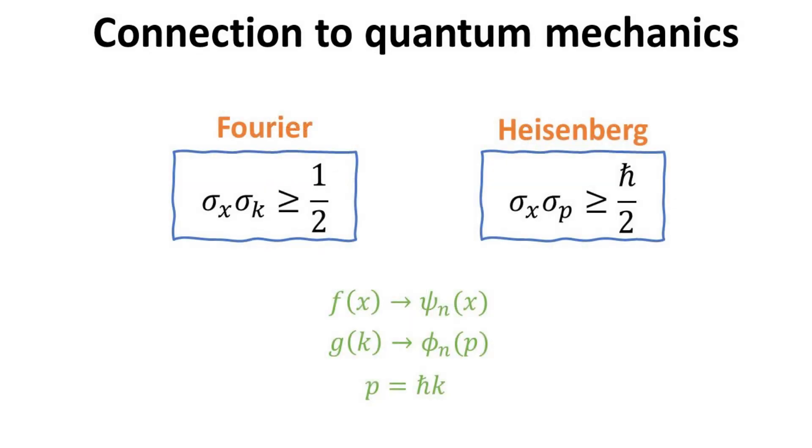In summary, the Fourier and Heisenberg uncertainty principle are mathematically the same, if one makes the mapping of the functions f and g in the dual Fourier domain to the quantum mechanics wave functions in the position and momentum representations. In addition, momentum is related to wavenumber via the de Broglie relation.